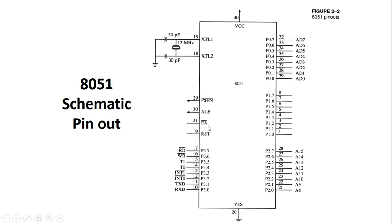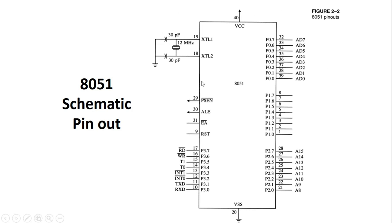The EA bar pin decides external access of program memory: connected to ground means external program memory is accessed; connected to VCC means internal program memory is accessed. The ALE pin — Address Latch Enable — is used for demultiplexing the address and data present on Port 0 pins of 8051. The PSCN bar pin is made low when reading from external ROM memory. Finally, pins XTL1 and XTL2 are used to connect an external crystal, which enables the internal clock oscillator block to generate the clock signal for the CPU.